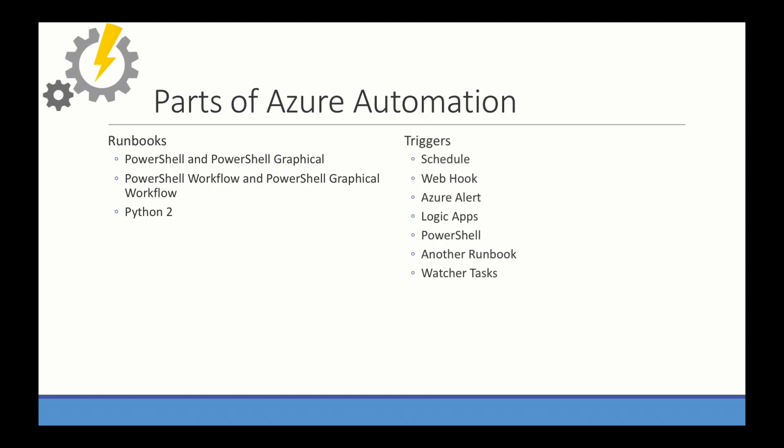These runbooks can be launched by different triggers. You can have schedules, web hooks, Azure alerts. Logic apps can run runbooks. You can call runbooks from PowerShell. You can call them from another runbook or a watcher task. A watcher task allows a system to watch for events to trigger an action, such as a file placed in a folder or an email arriving in an Office 365 account. This gives you a lot of flexibility in creating custom automation.